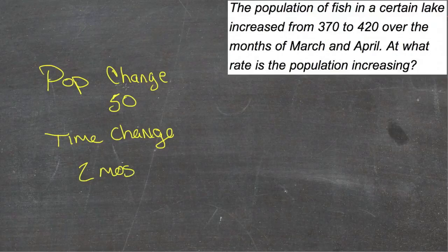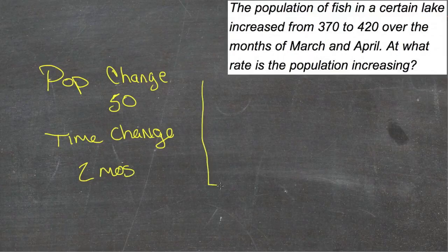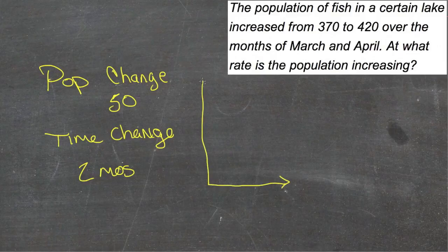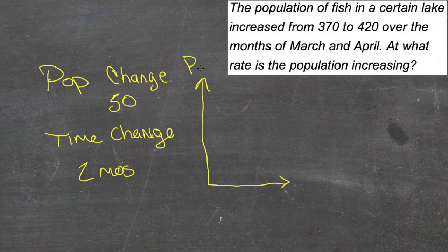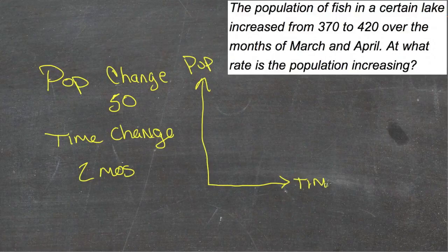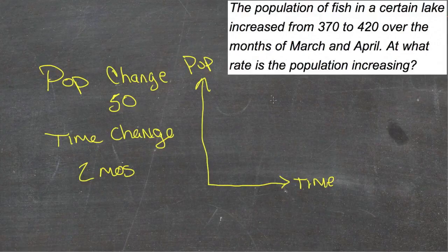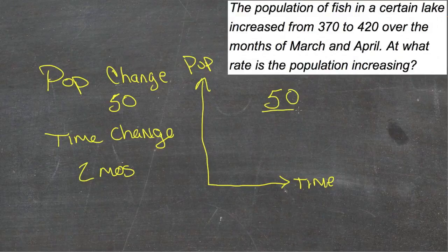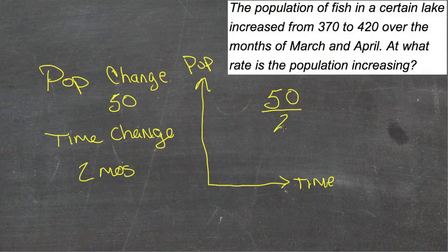So if we say the population change is on the y-axis, if we were to just imagine this thing as being on a graph. If we were to say the population change went this way, and time went this way, then our vertical change, our change in y, is the 50. So we'd have 50 as our change in y, or our rise.